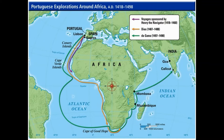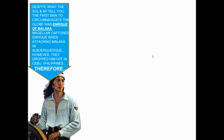We're going to talk about some explorers today. Believe it or not, the first person to circumnavigate the globe was not Magellan — it was Enrique of Malacca, who is not necessarily in the AP curriculum but is very important. He was eventually captured by Magellan when Magellan was attacking Malacca or Malaysia. However, they dropped him off in Cebu in the Philippines when Magellan got there.